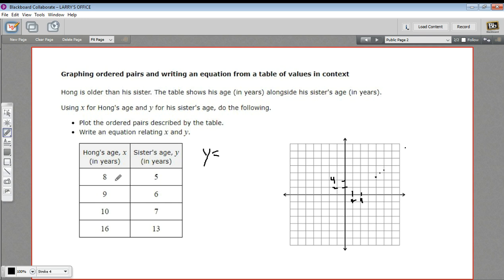So what do we have to do to eight to make it five, and nine to make it six, and ten to make it seven? You can start by looking at whether there's a relationship of adding or subtracting or multiplying and dividing. It looks to me like all you have to do is subtract three every time.